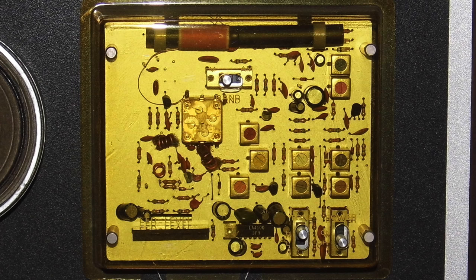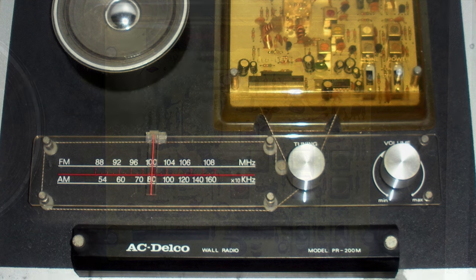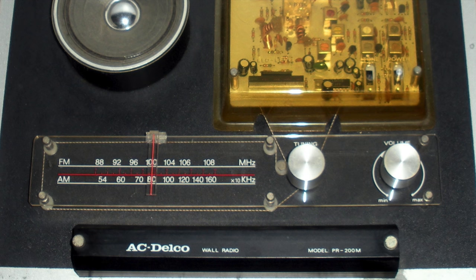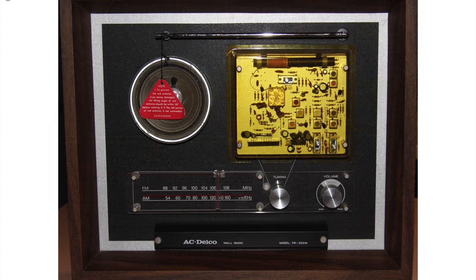Now this second one the PR200M made its way to the US and was sold under the AC Delco brand. So if you like the idea of a wall radio and you've still got FM reception which I know people in the US tend to have but not everyone around the world does anymore this might be something that you want to look out for the next time you're out and about thrifting.